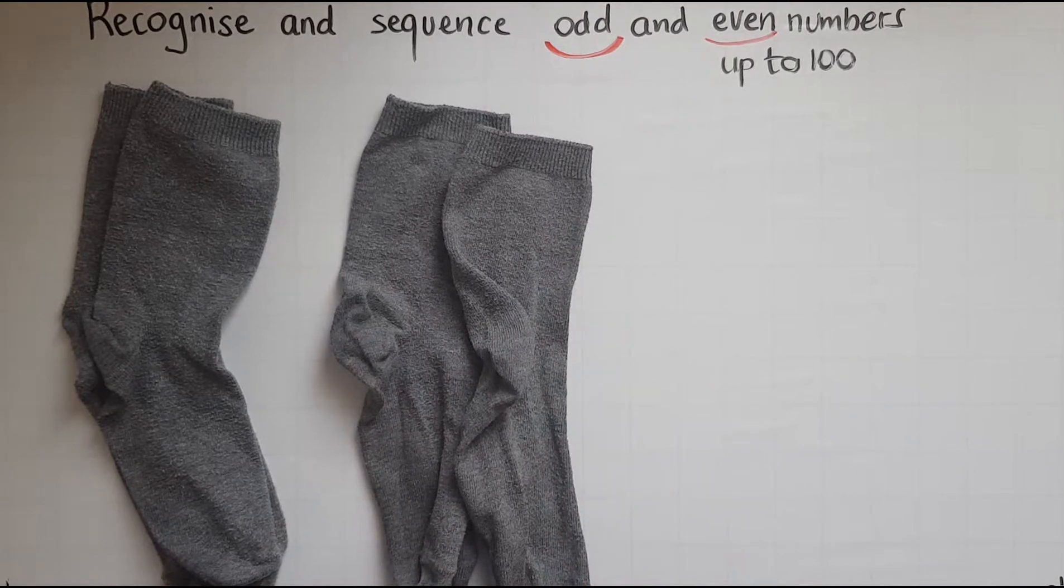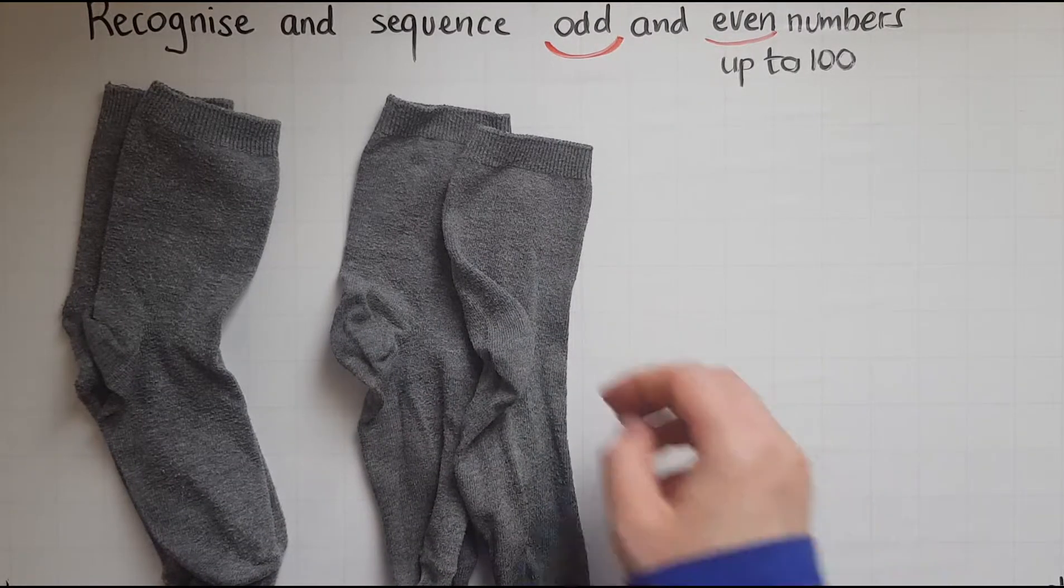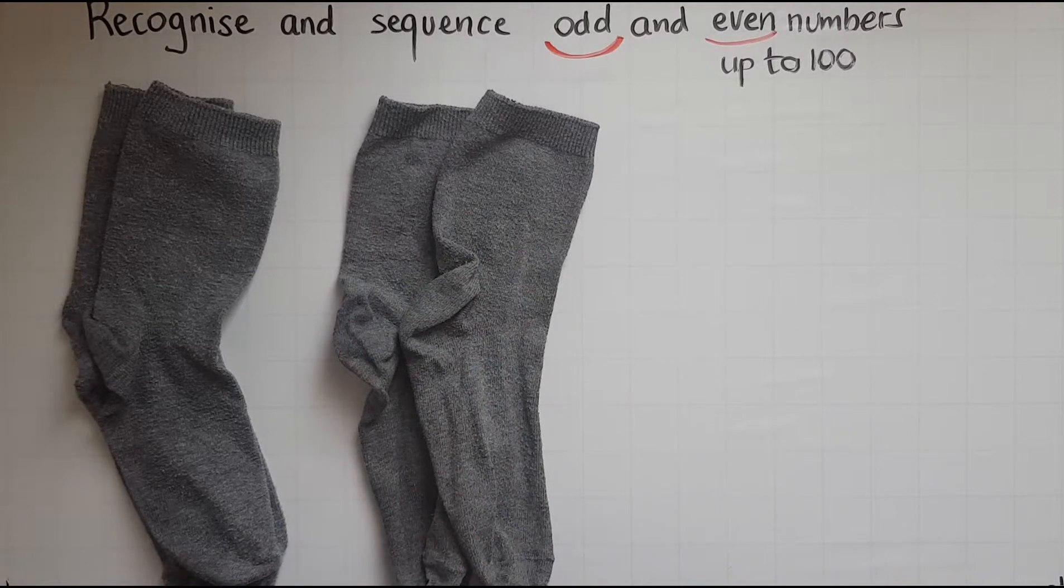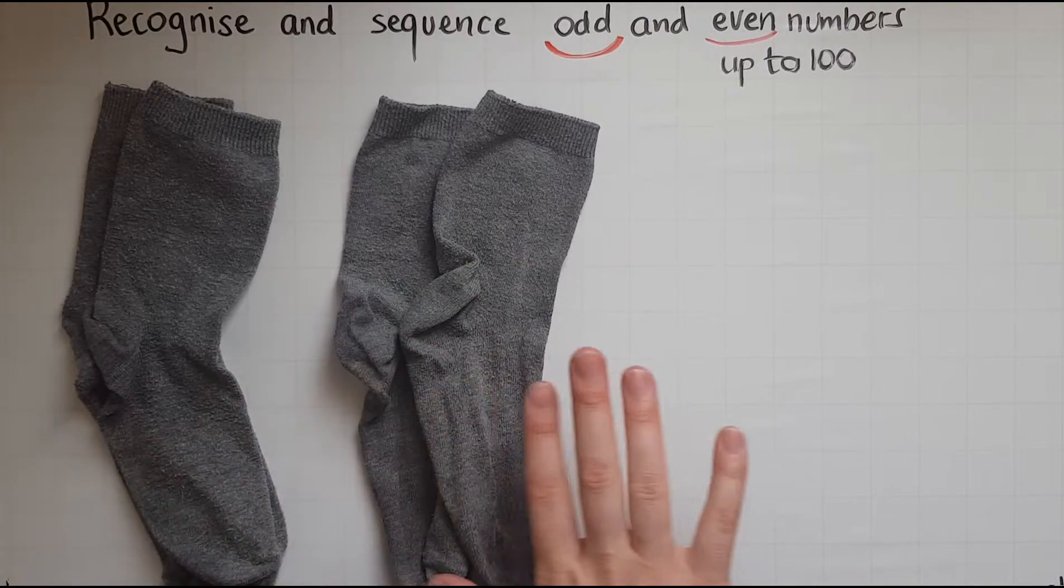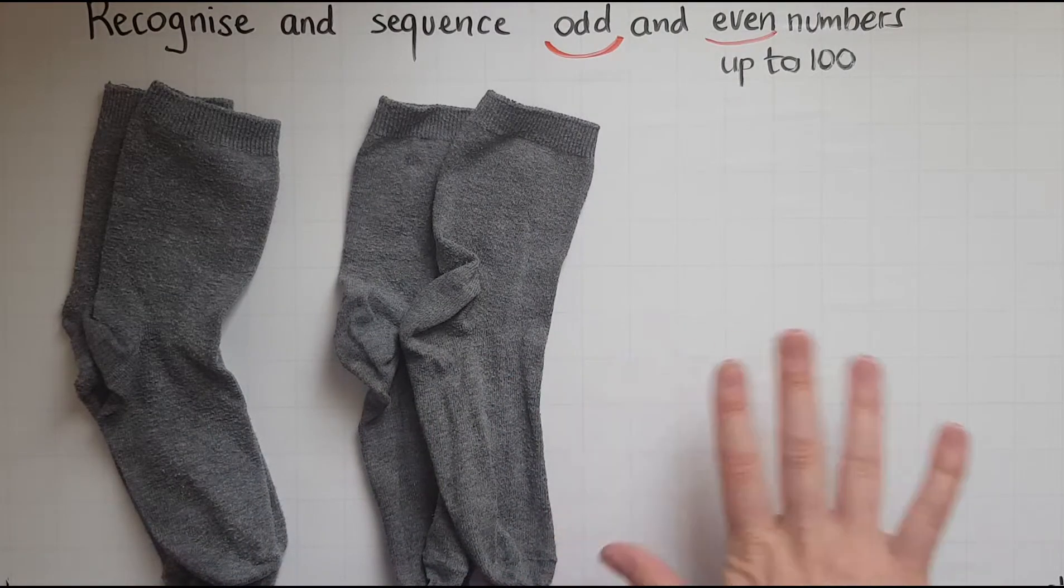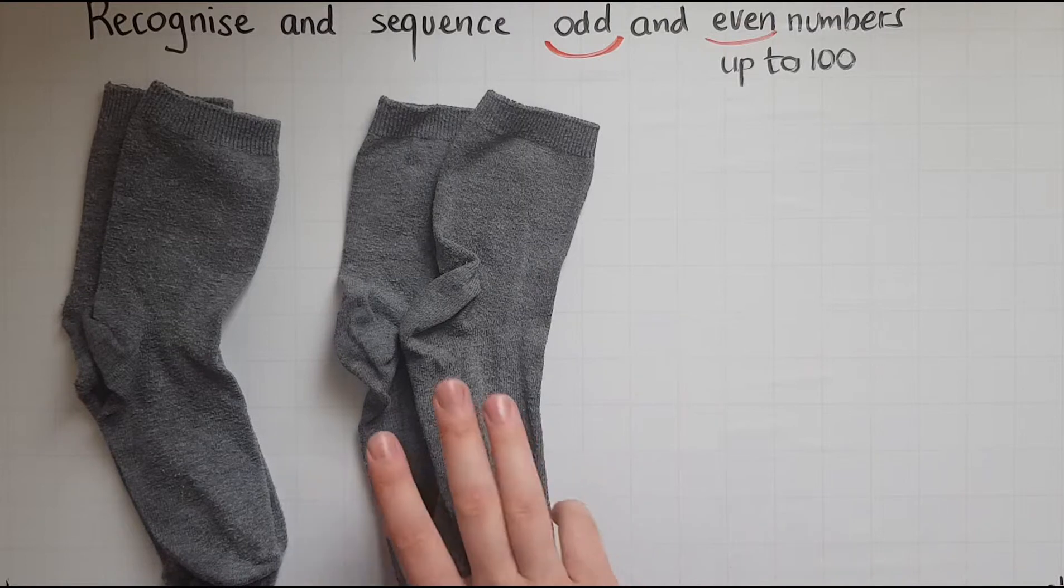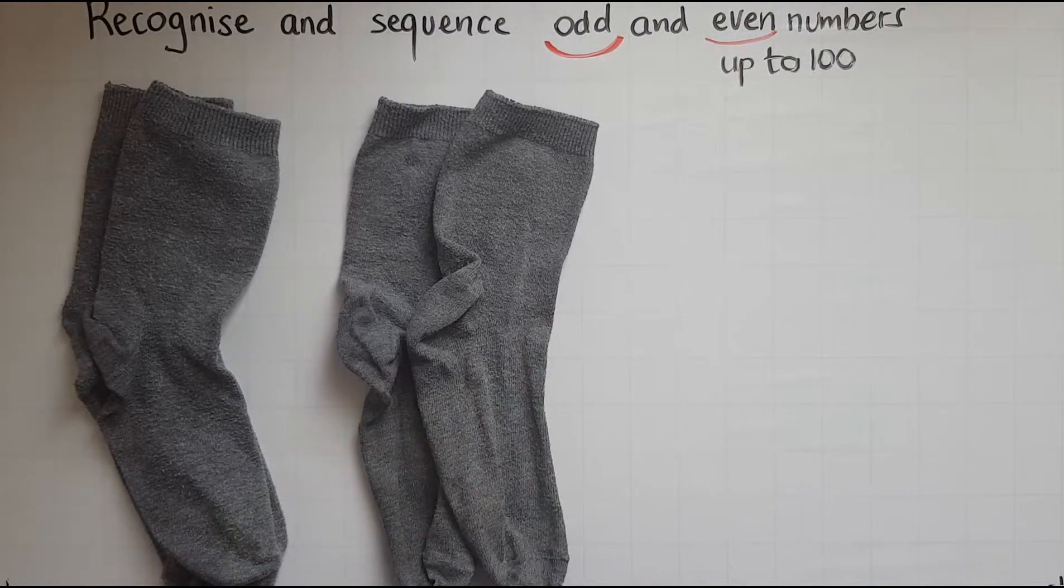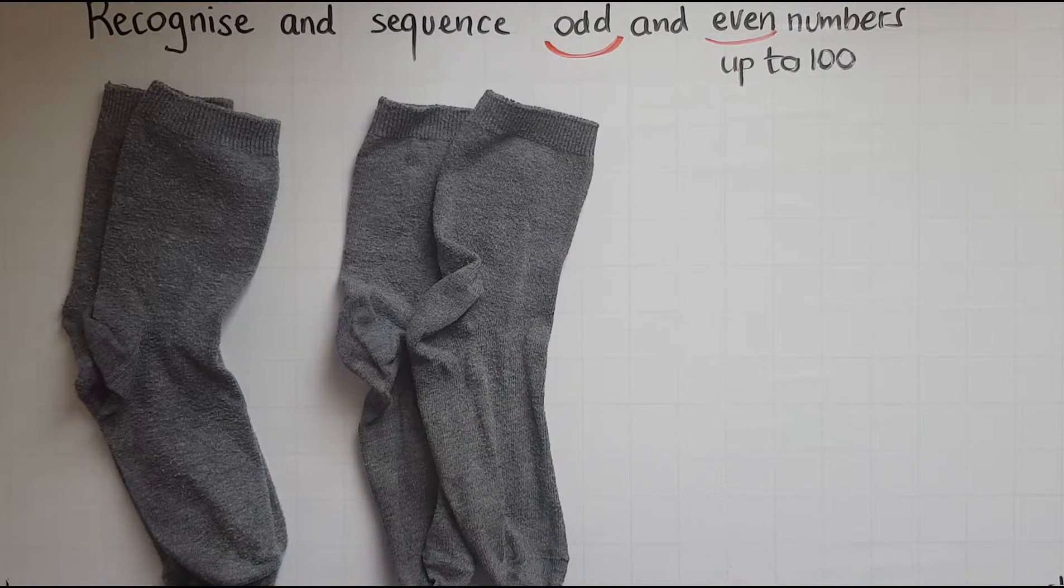There is another sock. Now I've got four socks, but I've made two pairs. So there is no odd sock. There is no sock left, which means that four is an even number because I can make pairs and have no odd socks left.